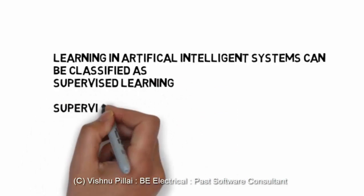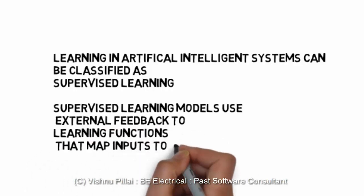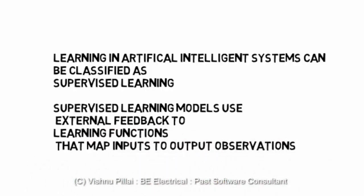Learning in artificial intelligence systems can be classified as supervised learning. Supervised learning uses external feedback to the learning functions that map input to the output.